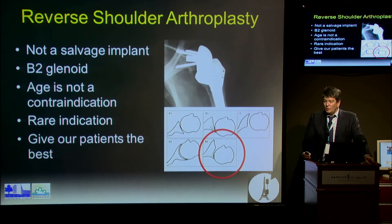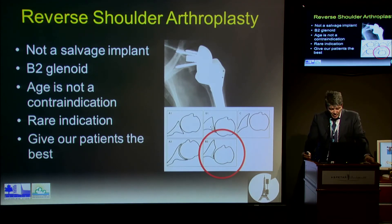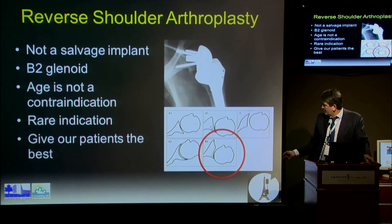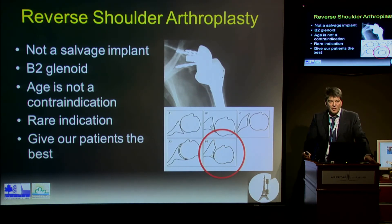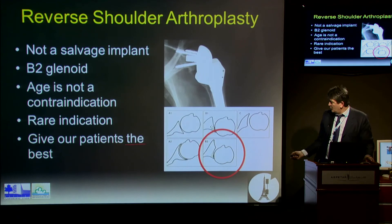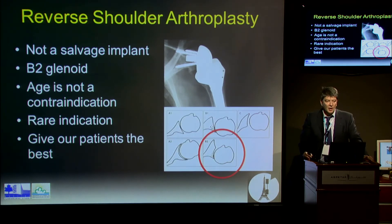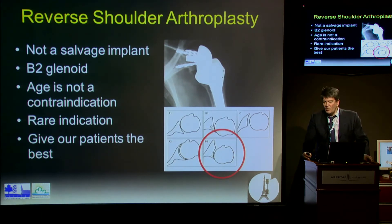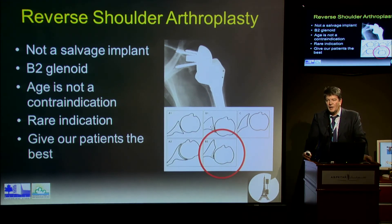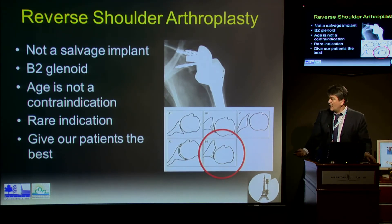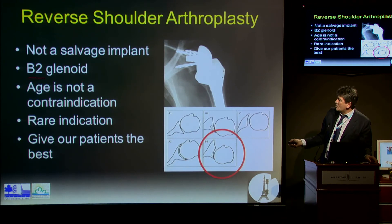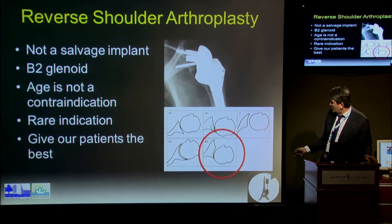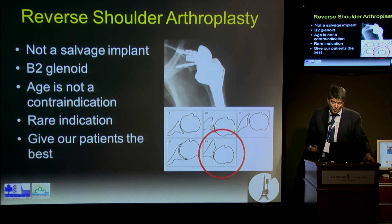What about the reverse? Do we have to put a reverse in young patients? This might happen, at least for B2. For B2 glenoid morphology, the only solution may be a reverse — if you put an anatomic implant on a B2, it's going to be a failure. The systematic analysis shows reverse results are comparable to total shoulder arthroplasty. The reverse is not a salvage prosthesis — it's a prosthesis like any other. There's a very rare indication, but age is not a contraindication.